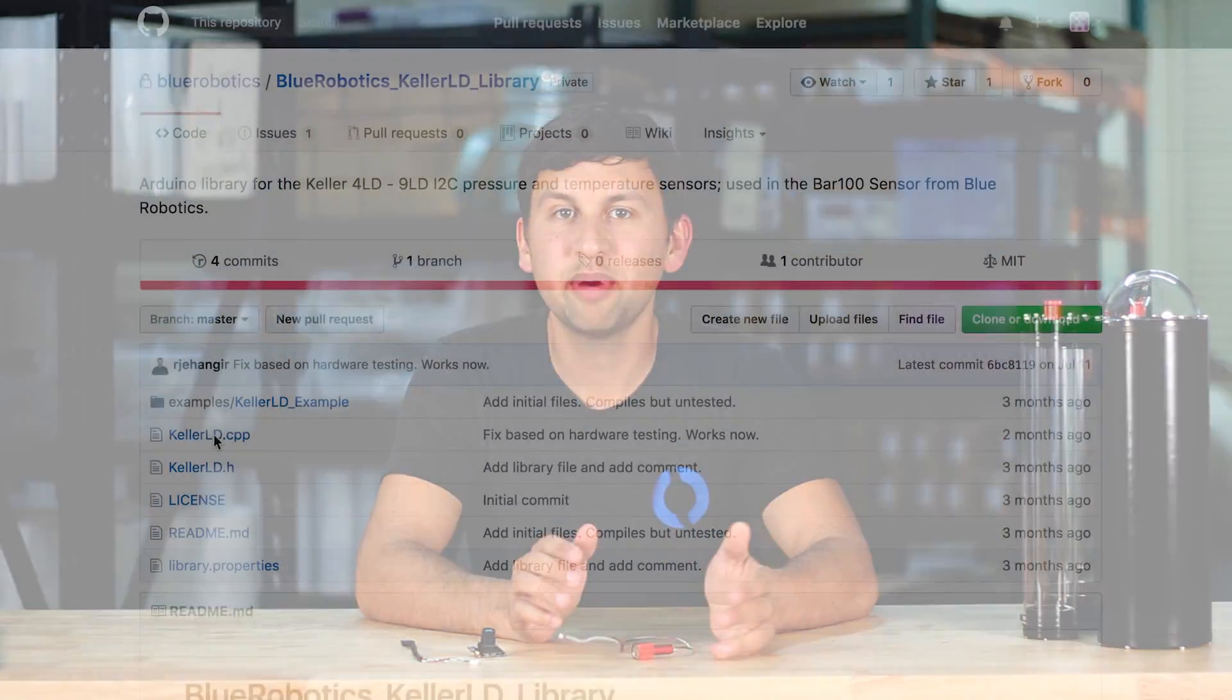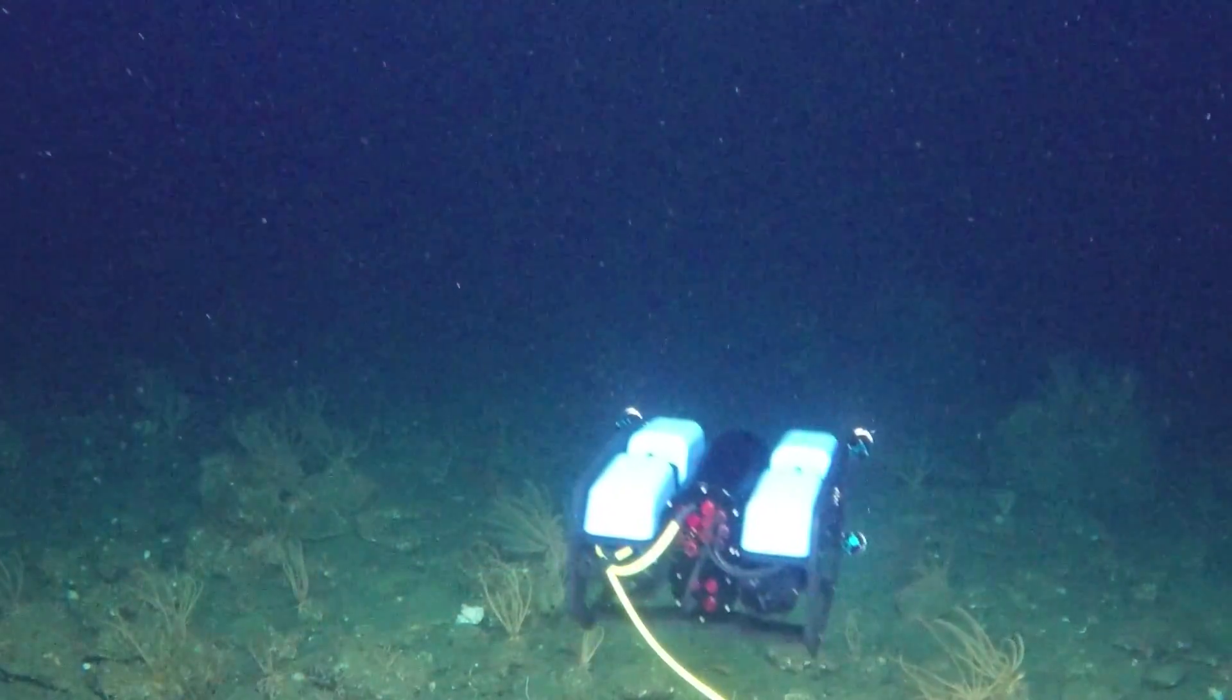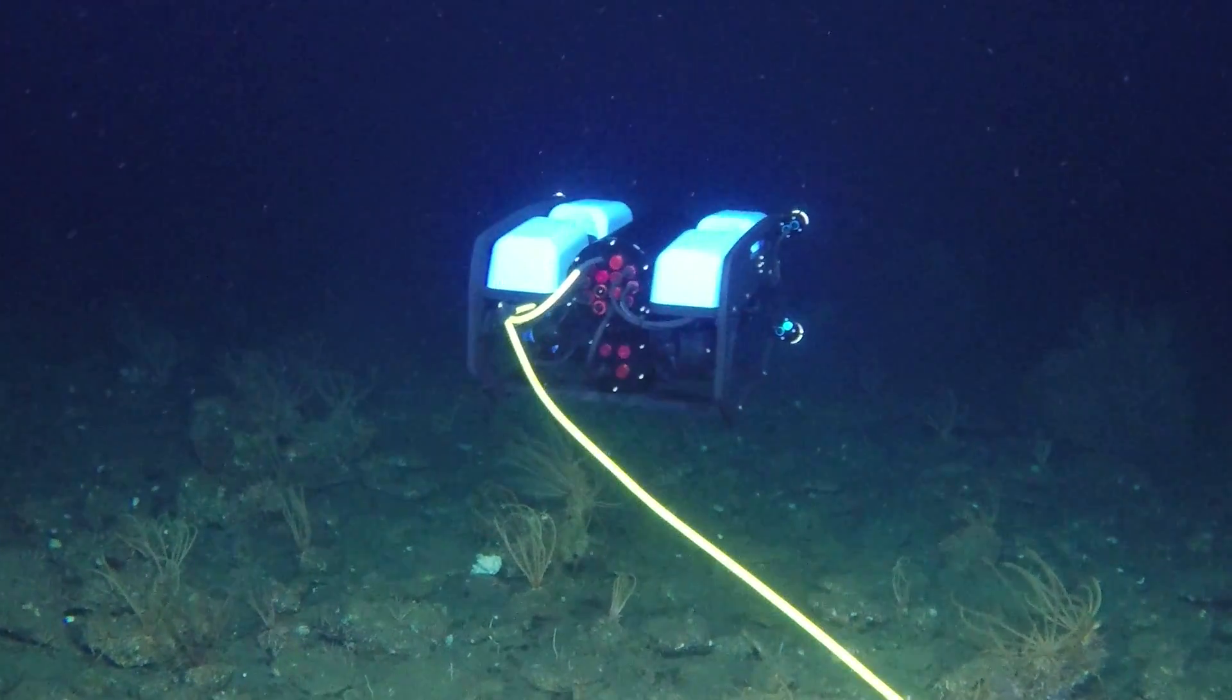The sensor has a communication protocol that's slightly different than the BAR-30 sensor, so we have new Arduino and Python libraries to support it. It's also already supported in ArduSub and ready to use on the Blue RLV2 or any other ArduSub powered vehicle.